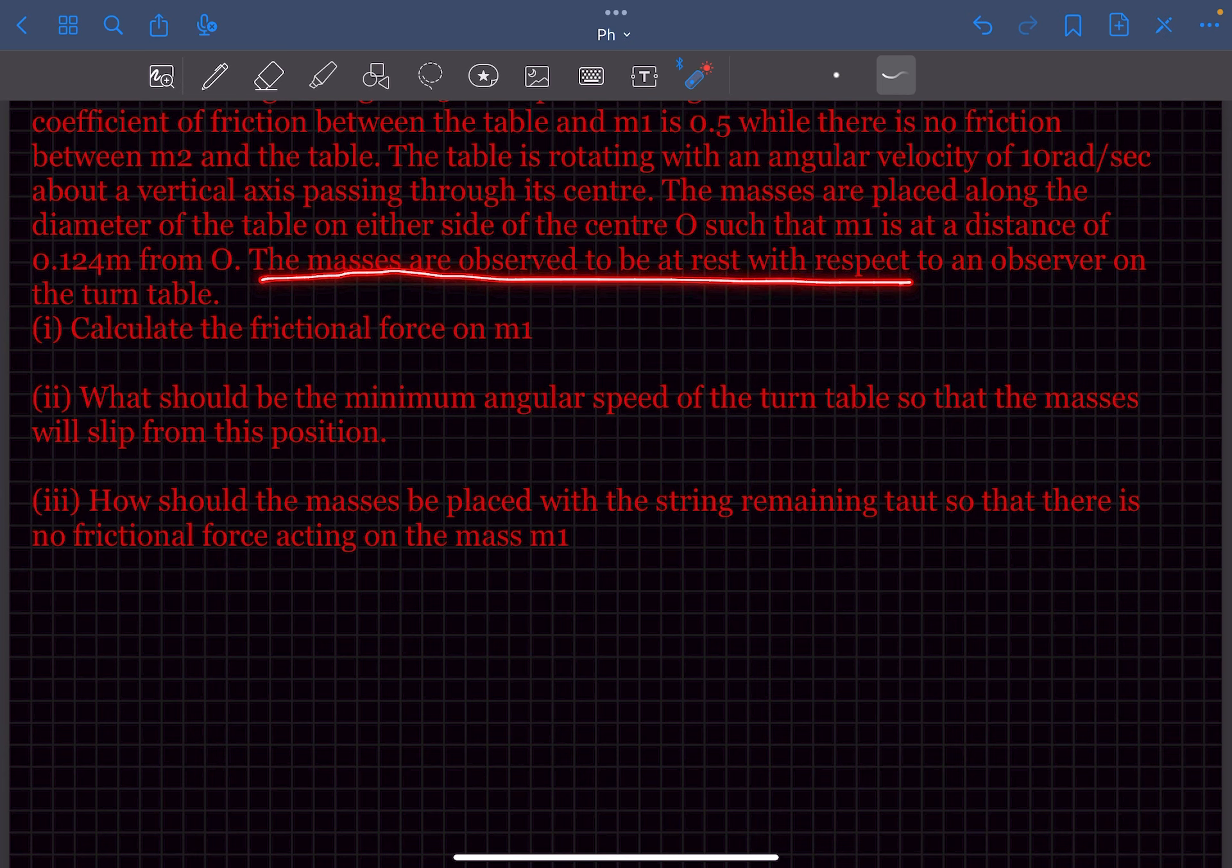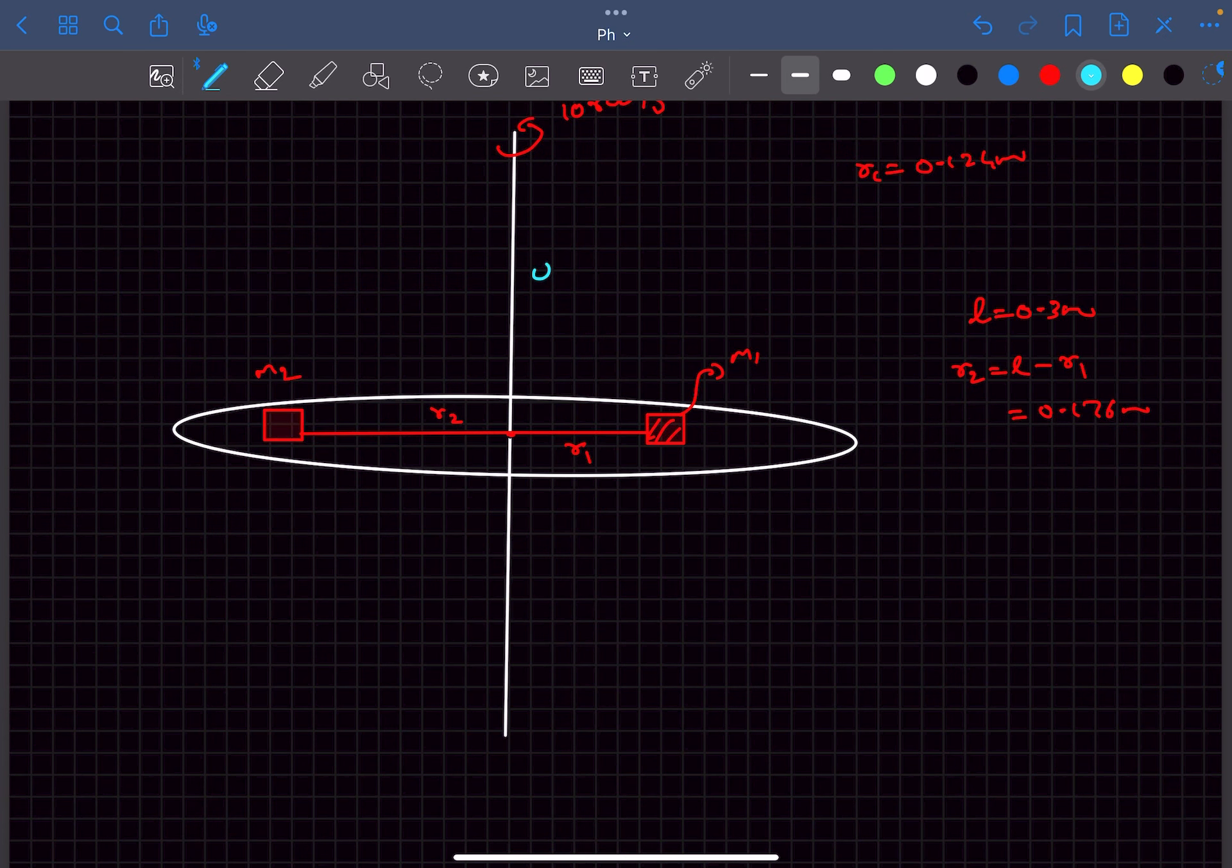In the question statement it's given that the masses are at rest relative to the turntable. So let's say we are observing the blocks by taking the frame of reference as the turntable. So in that case we have to apply a centrifugal force which will be radially outward. So the magnitude of the centrifugal force on this block will be m1 omega squared r1. On this block m2 will be m2 omega squared r2.